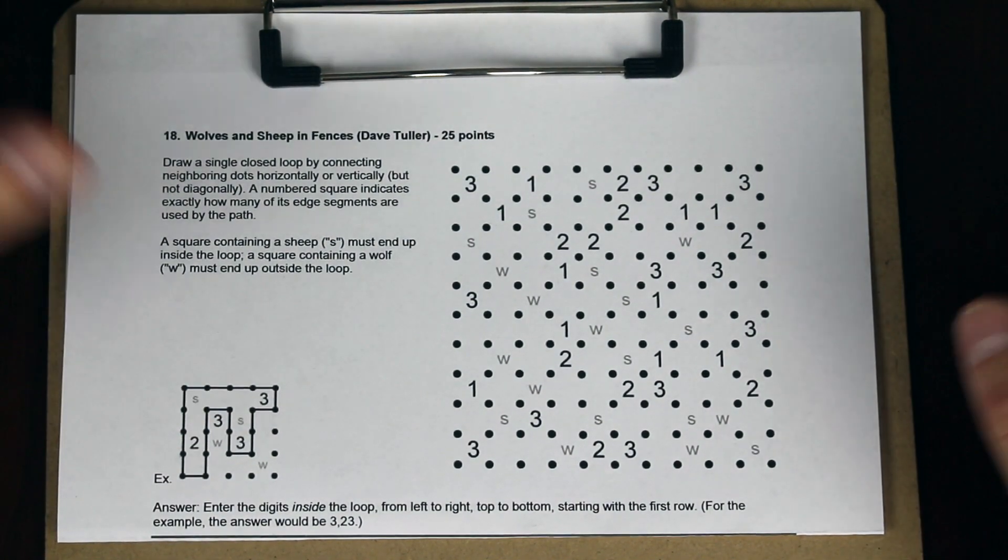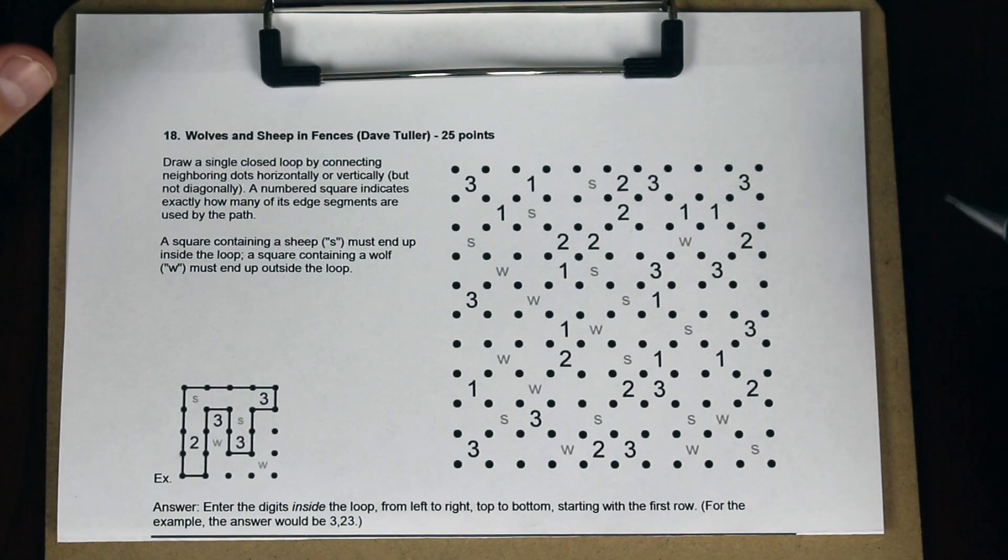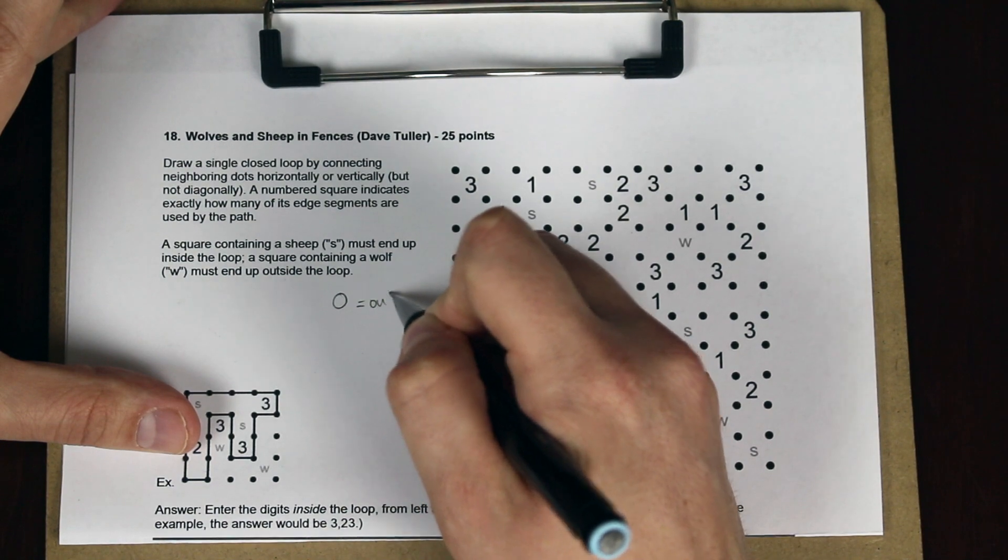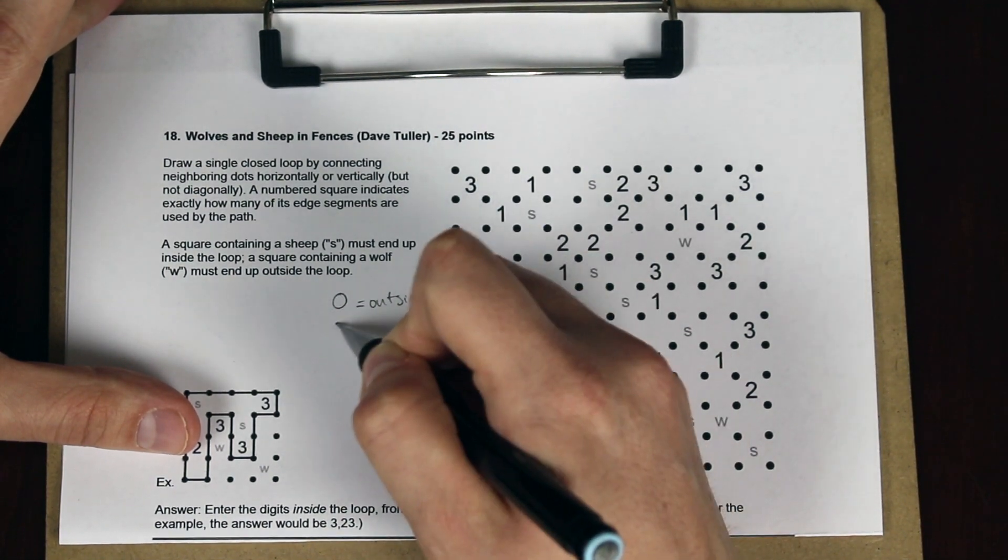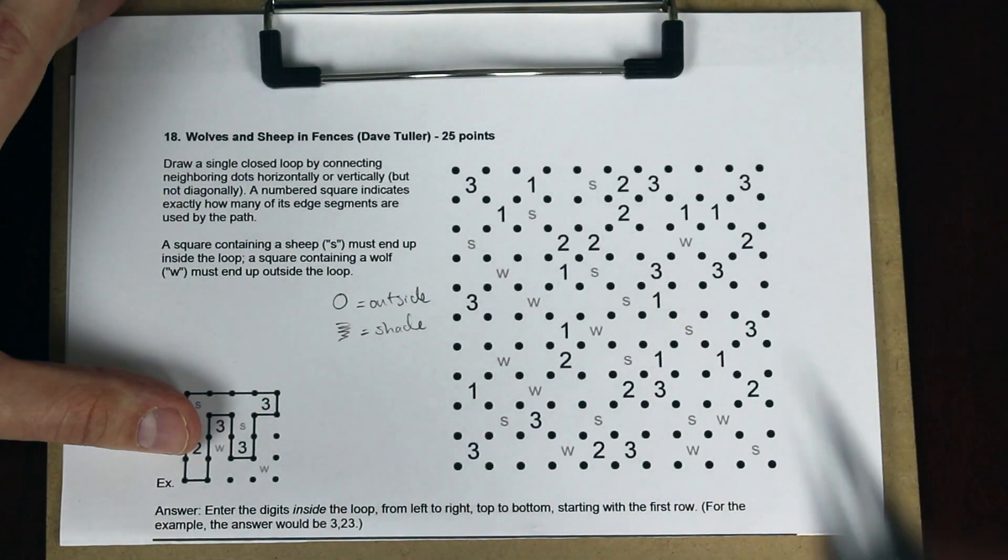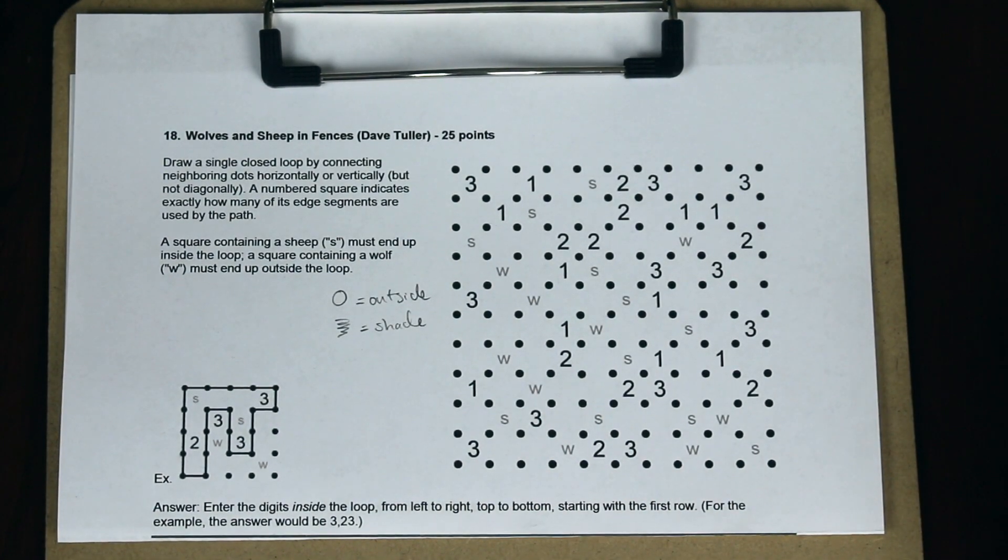Okay, without further ado, let's get started here. So, first we're going to agree on some notation. I'm going to use a circle to represent outside the loop, and I'm going to shade the inside of the loop. And that just makes it a little bit easier to see, I think, on the camera, than a notation that I would actually use for speed solving.